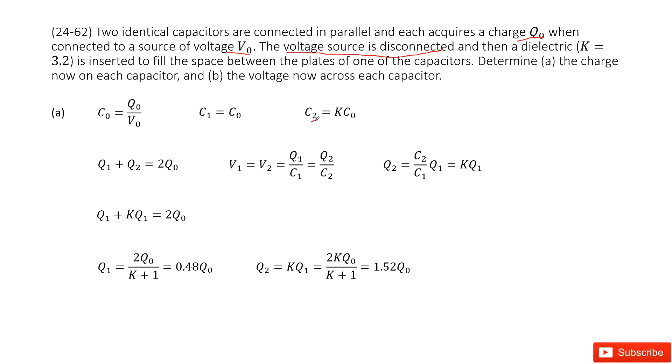So we think this capacitor is C₂. And we can see C₂ is inserted with a dielectric. So the capacitance for C₂ becomes the dielectric constant K times C₀. And capacitor C₁ keeps constant C₀. This is the two capacitances.